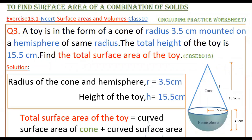Hello everyone, today I am going to tell the solution of the third problem from Exercise 13.1 from NCERT, from the chapter Surface Areas and Volumes, Class 10. The problem: a toy is in the form of a cone of radius 3.5 centimeters mounted on a hemisphere of the same radius. The total height of the toy is 15.5 centimeters. Find the total surface area of the toy.